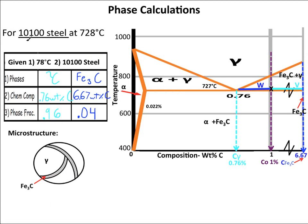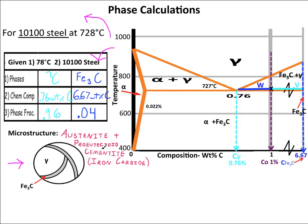Now we're going to move on to a hyper-eutectoid steel at 728 degrees Celsius, which is one degree above the eutectoid temperature. I've already put in the calculations from the last video into this table here. Here is what the microstructure looks like. The iron carbide has formed at the grain boundaries of the austenite, therefore decreasing the gamma's composition to the eutectoid composition from the overall composition. We call this microstructure austenite plus pro-eutectoid cementite, or iron carbide — pro-eutectoid meaning that it came out above the eutectoid temperature. The large amount of gamma is reflected in the space it takes up in this microstructure.